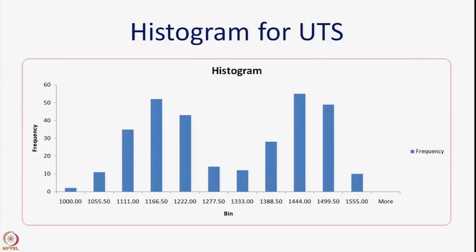Histogram gives us a lot of information. For example, when I make a similar plot for ultimate tensile strength, I find that the data is bimodal. Recall that the mode of a distribution is where data occurs with the highest frequency. Here, 1166.5 MPa is the highest frequency in one peak, while 1044 MPa is the highest in another. This bimodal data arises because there are two temperatures in the dataset.